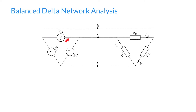Similarly, V2,3 is the voltage between line 2 and line 3, and V3,1 is the voltage between line 3 and line 1. Similarly for our impedances, we have Z1,2, Z2,3, and Z3,1, and we also have currents that flow through each of these, similarly notated I1,2, I2,3, and I3,1.